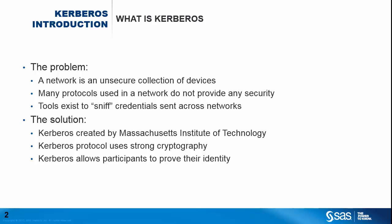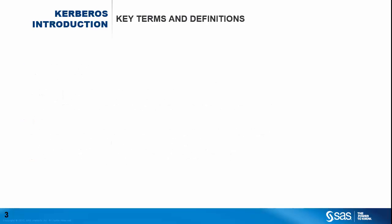Kerberos is all about authentication — that is, proving to each participant the identity of the other participant, whether that is a user or a service. Kerberos operates with a zero knowledge proof: the participants demonstrate they know something without ever divulging the thing that they know. Now we have a brief understanding of what Kerberos is, let's look at some key terms and definitions.